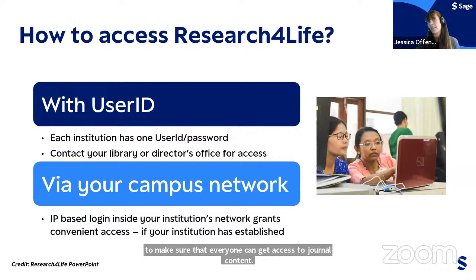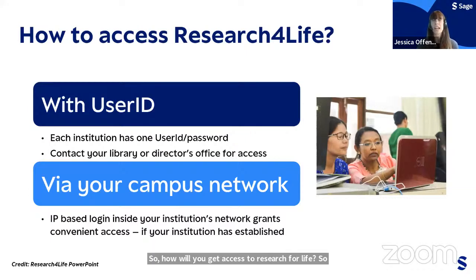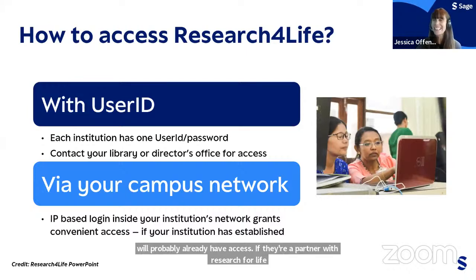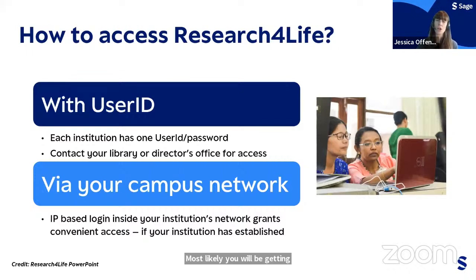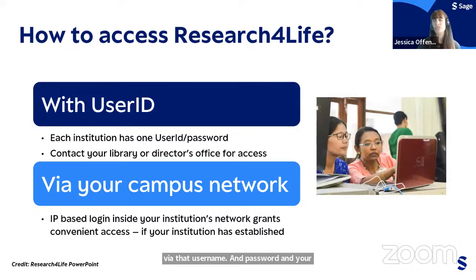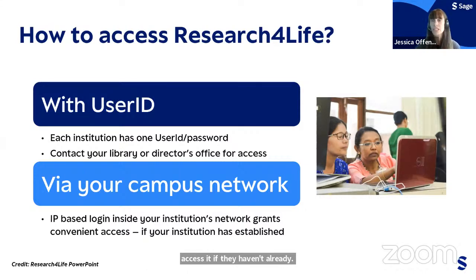Each institution has one user ID and password for Research4Life. Your institution will probably already have access if they are a partner, and most likely you will access it via your campus network through IP-based login. If not, it will be via username and password, which your librarian or director's office will have. If you're not sure, reach out to your librarian to get more information on the best way to access journal content through Research4Life.